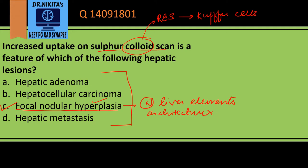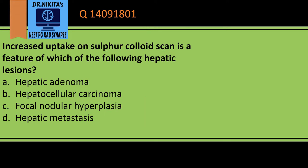Hepatocellular carcinoma is carcinoma of hepatocytes and not Kupffer cells, so it will not show uptake on colloid scintigraphy. This is a very important point to remember: FNH shows uptake on sulfur colloid scan.